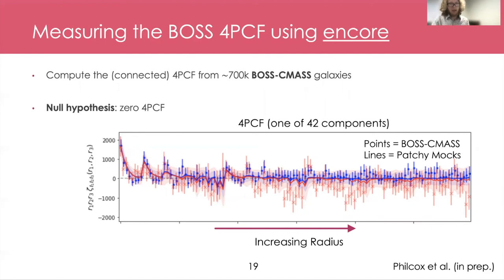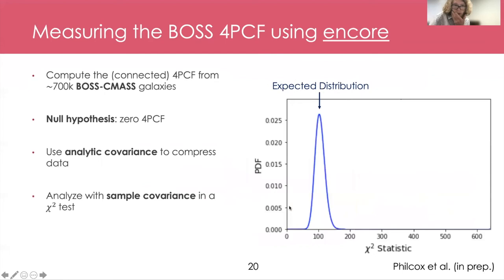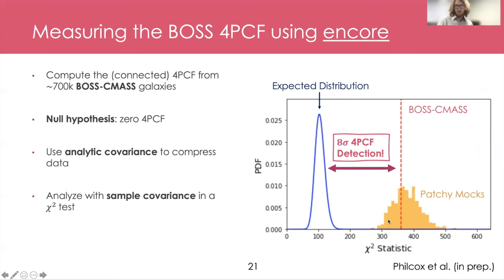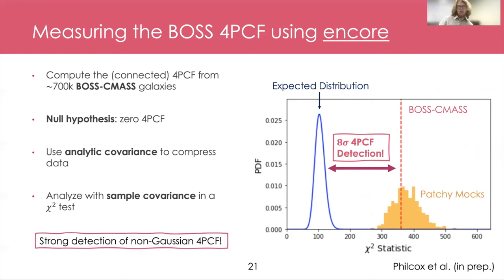So more statistically, can we actually be certain that we've detected something and not just very correlated noise here? In order to do this, we can basically look at a classical chi-squared test. We will make use of these analytic covariances I mentioned in order to compress down the data. So rather than having 5000 bins, let's go to 50, but try and keep the signal to noise the same. So doing a classical chi-squared test, what we find is the expected chi-squared statistic looks like this blue line and what the actual data look like are these yellow and red points here. Yellow I'm showing some mocks and red the actual BOSS data. And you can see that the data is very much not compatible with our null hypothesis of zero four-point function. So the crucial point here is that we have a strong detection of the non-Gaussian four-point function from current data. And with upcoming data, this is simply going to get stronger.